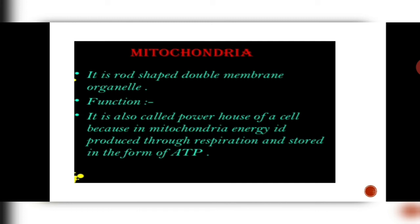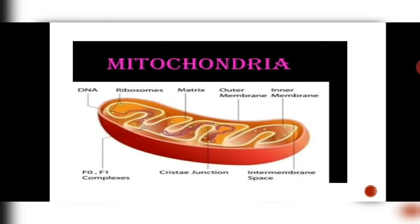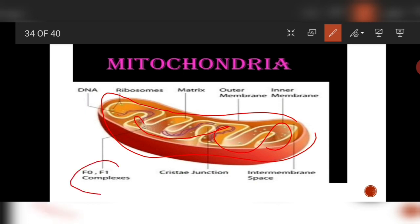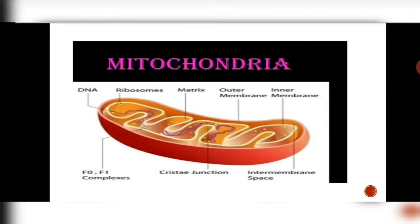The next organelle is the mitochondria. It is again a double membranous structure. The outer membrane is continuous while the inner membrane is folded many times to hold structures called oxyzomes, which are responsible for production of energy. That is why mitochondria is known as the powerhouse of the cell. The energy is formed in the form of ATP — adenosine triphosphate molecules — which are the energy currency of our body. The F0-F1 complexes are nothing but oxyzomes where the energy synthesis is going to occur.